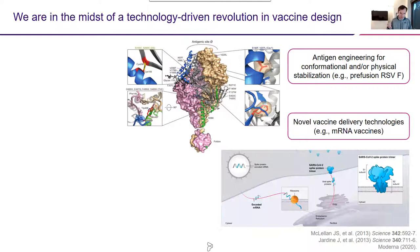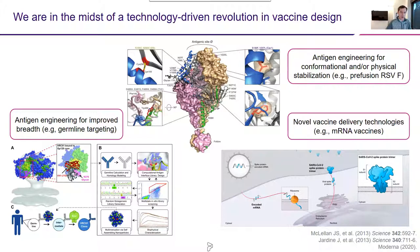Obviously, mRNA vaccines are totally revolutionizing the way that we're approaching vaccine design, manufacturing, and distribution, and have been incredible as pandemic response vaccines against SARS-CoV-2. And I'll highlight germline targeting as an approach bringing an unbelievable amount of technology to bear on designing vaccines that elicit broadly neutralizing antibodies against difficult targets like HIV envelope. So overall, it's an incredibly exciting time to be in the field.